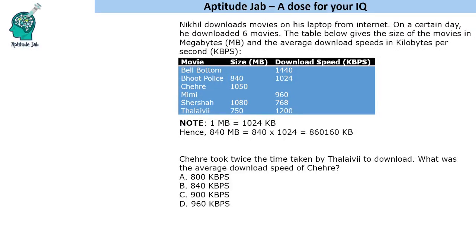Hello everyone, welcome to Aptitude Jab. This is a calculation-based DI set which talks about a person downloading different movies. The size of the movies is given in megabytes and the download speed is in kilobytes per second. We are also given the conversion: one megabyte is equal to 1024 kilobytes.